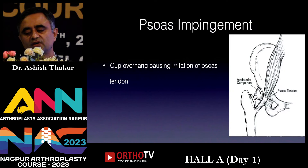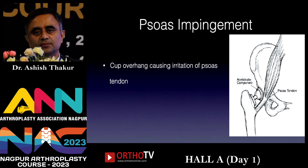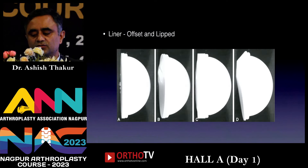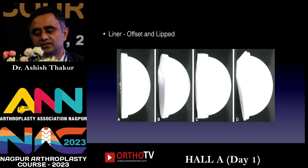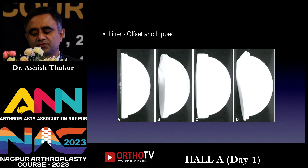SOAS impingement is another complication that can occur due to improper cup placement. Intraoperatively, ensuring that the acetabular cup is not proud and avoiding excessive dissection around the tendon aids in reducing the risk of injury. Liner selection affects impingement in THA — offset liners and lip liners reduce range of motion with subsequent impingement of the femoral implant on the liner.